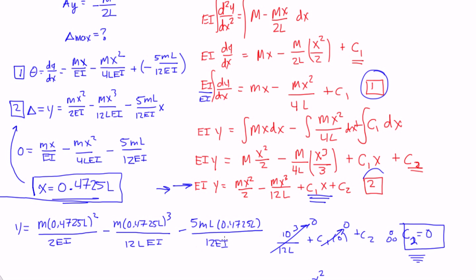So minus 5mL times x, and x is 0.4725L divided by 12EI. And an easy way to do this would be, you can actually factor out an m over EI, and you'd be left with 0.4725L squared over 2 minus 0.4725L cubed over 12L minus 5L 0.4725L divided by 12, and then close bracket here.